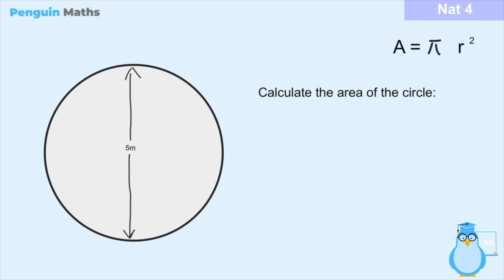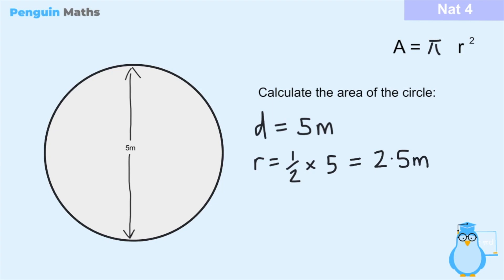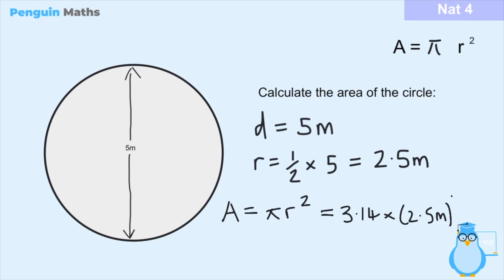Here's another problem where we've been asked to calculate the area of the circle, but this time instead of the radius we've been given the diameter of 5 meters. To find the area we need to convert this to the radius: the radius is half the diameter, so radius = 5 ÷ 2 = 2.5 meters. Now we can say A = pi × r² = 3.14 × 2.5², and putting this into a calculator gives approximately 20 meters squared for the area of the circle.